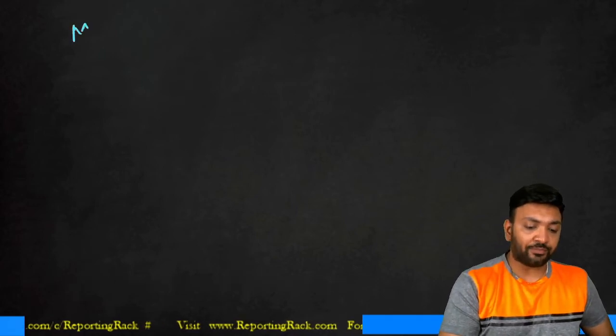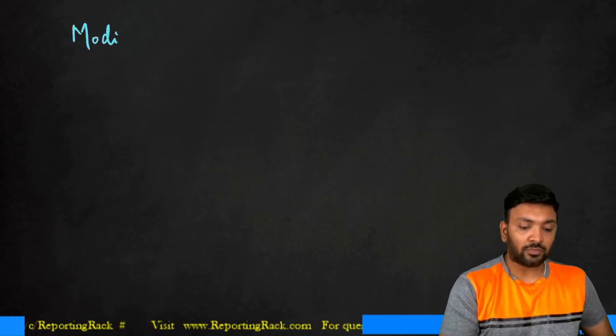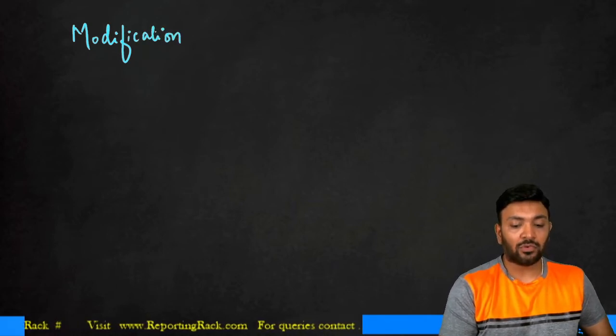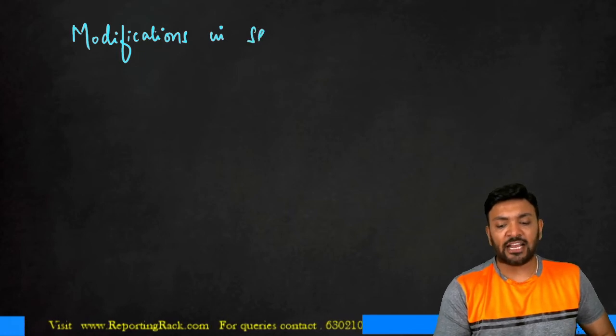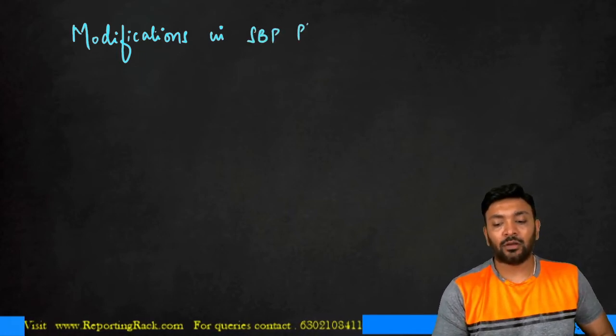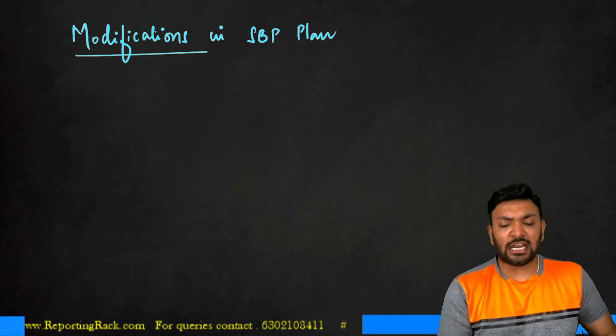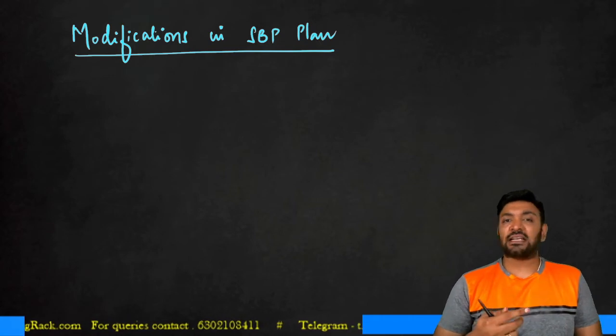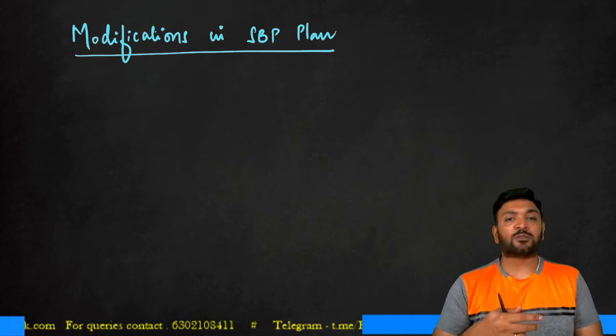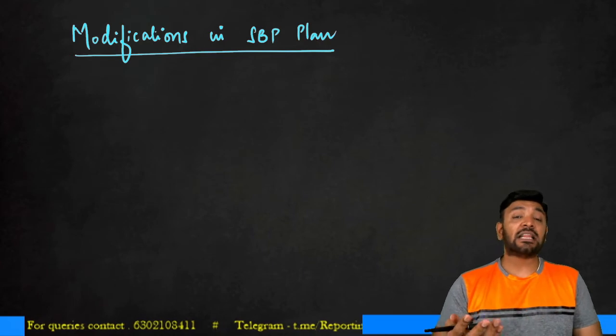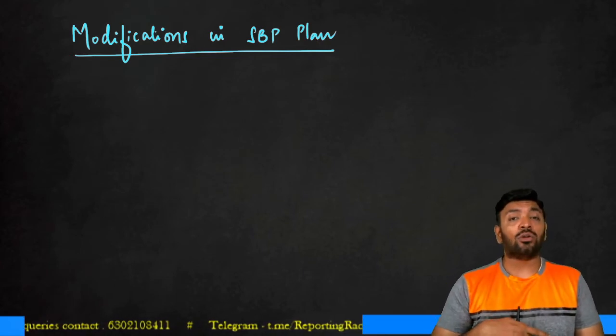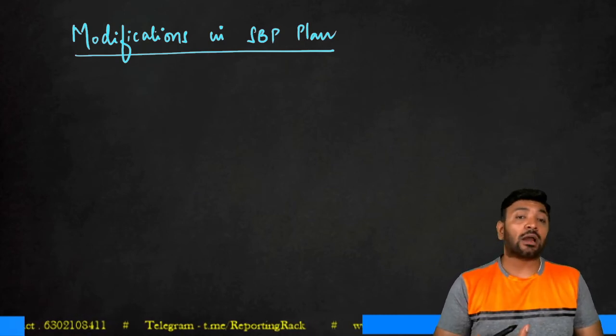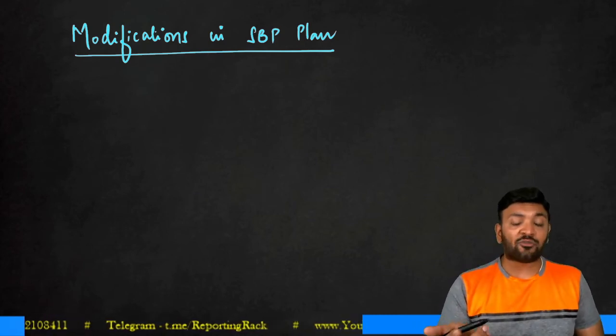Modification in share-based payment plan. Now generally the modification can occur in this way: suddenly the company comes up and says that probably the exercise price has to be increased, or sometimes the market price of share has come down so the exercise price is reduced, or sometimes they can come up and say that I don't think I can afford the share-based payment plan so I'll have to scrap this plan.